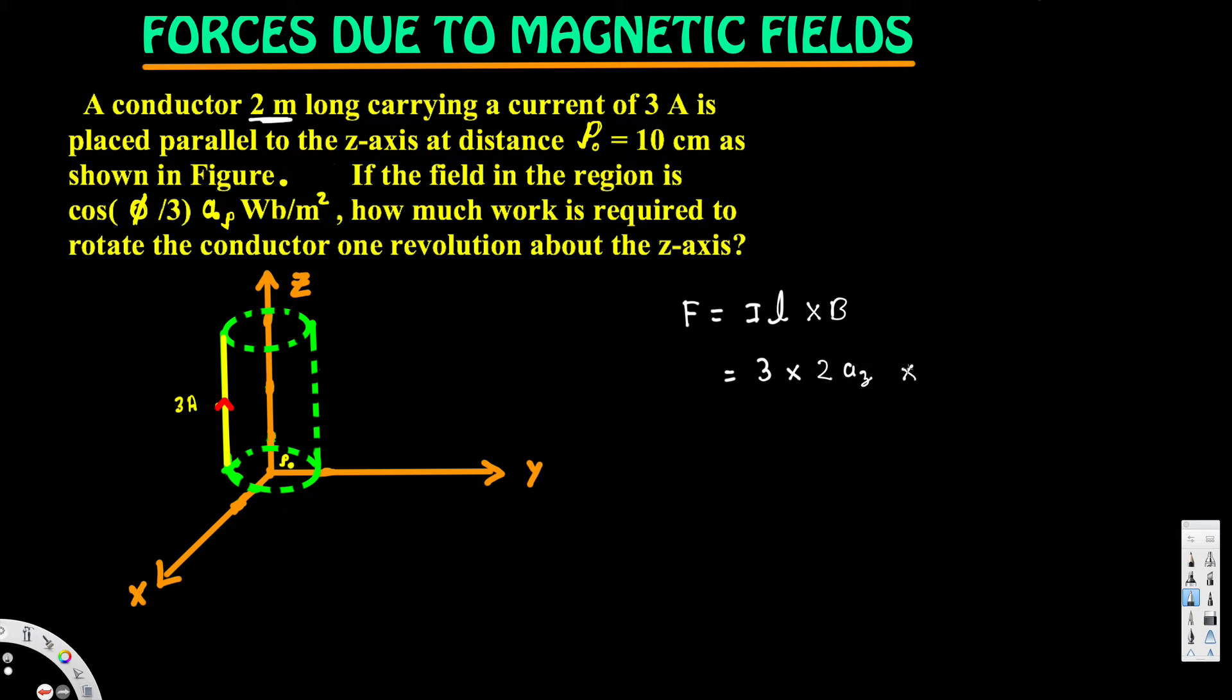And then cross the magnetic field, which is given by cos(5φ/3)aρ. Okay, now if we do the cross product and multiply this one, we are going to get 6cos(5φ/3)aφ Newtons. So this is our force.